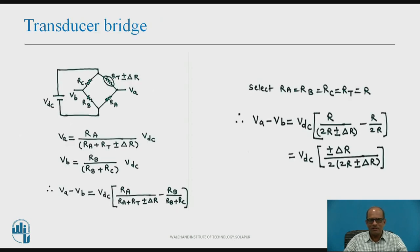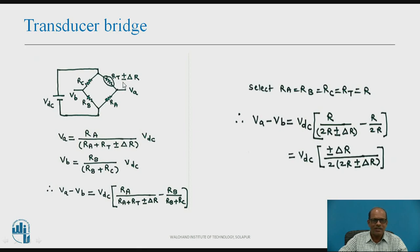We will now see how to make use of this PT100 for sensing temperature. For sensing temperature using PT100, we require a transducer bridge as shown in the circuit. The resistance of PT100 at 0 degree centigrade is RT, and resistance at a given temperature is RT plus or minus delta R. The bridge resistances are RA, RB, RC, and PT100.